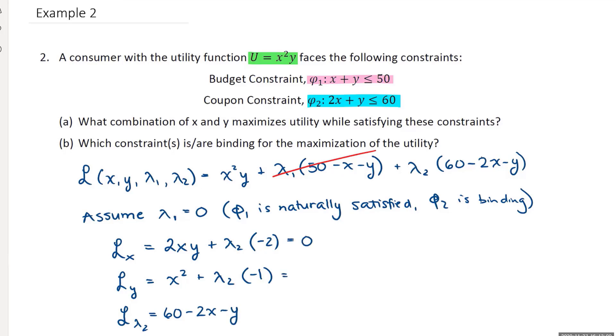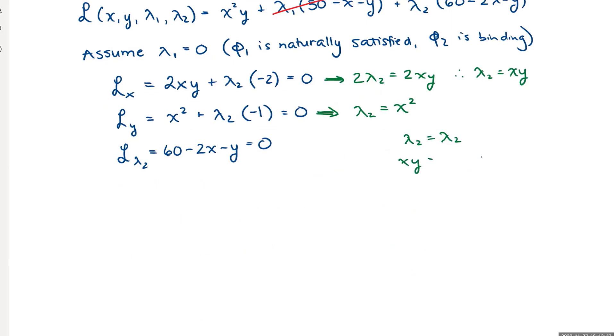Now I set these derivatives to be equal to 0 and I'm going to solve for my lambdas. So 2 lambda 2 will be equal to 2xy. Therefore, lambda 2 will be equal to xy. For the derivative with respect to y, I'm going to get lambda 2 is equal to x squared. Putting my lambdas together, lambda 2 is equal to lambda 2, I get xy is equal to x squared. Dividing both sides by x, I get y is equal to x.